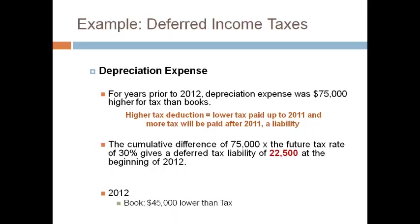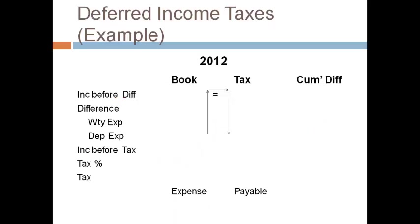In prior years the future tax rate was the current tax rate of 30%. In 2012, book depreciation was lower than tax by $45,000. Set up the calculation with two columns, one for book and one for tax. Start the first line with income before differences. Next, list the differences on separate lines — one for warranty expense, one for depreciation. Put the given dollar amounts on the corresponding lines. The example gave the book and tax amounts for 2012. For depreciation, the amount given was the difference. You can put any amount in the two columns as long as the difference is greater negative by $45,000 on the tax side.